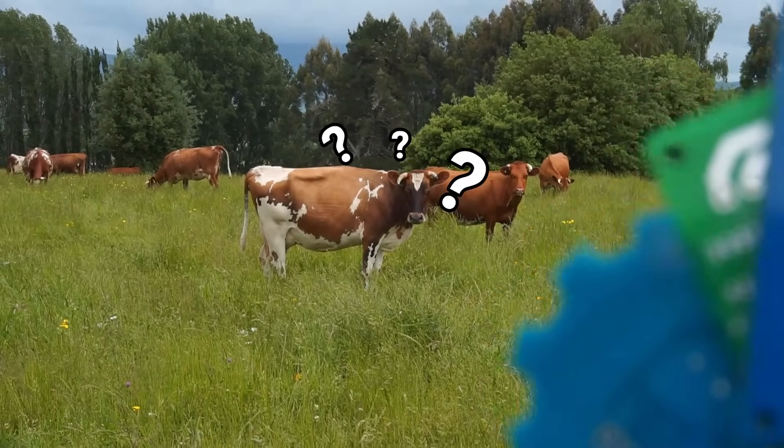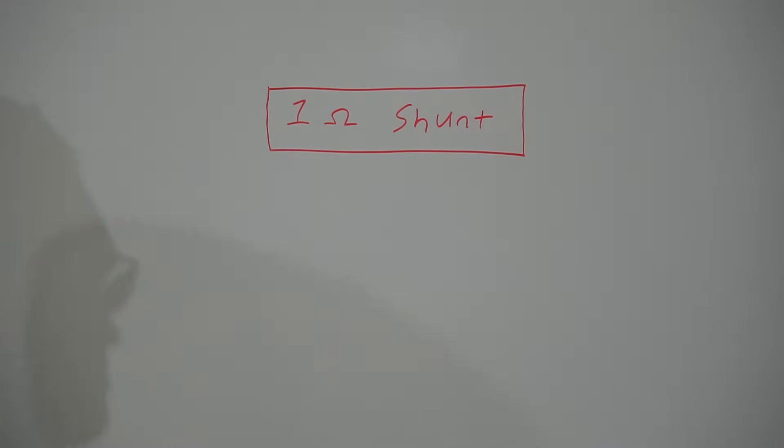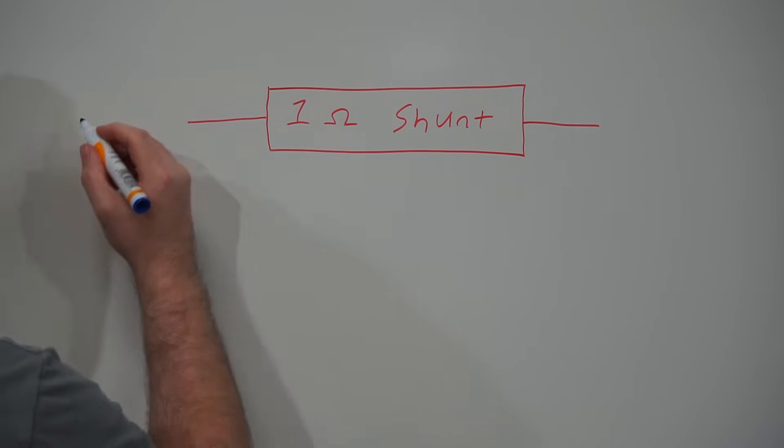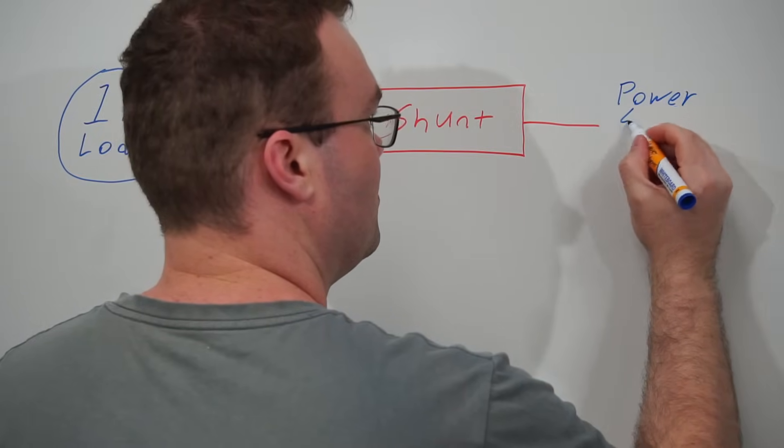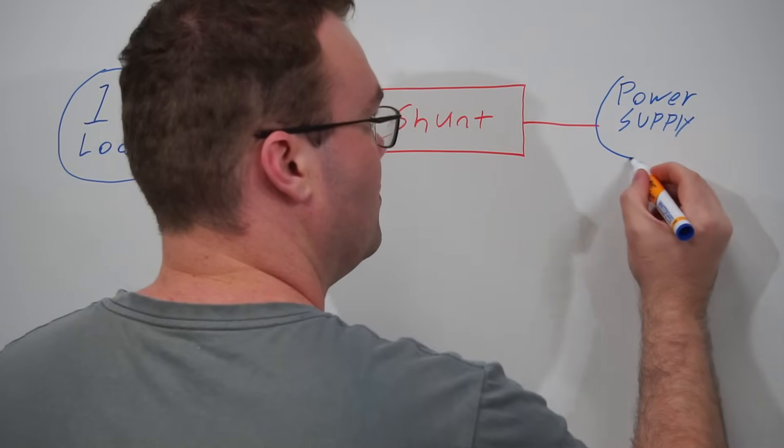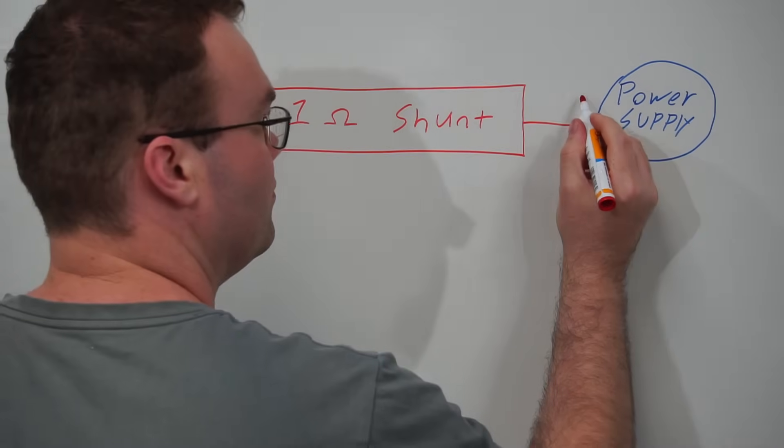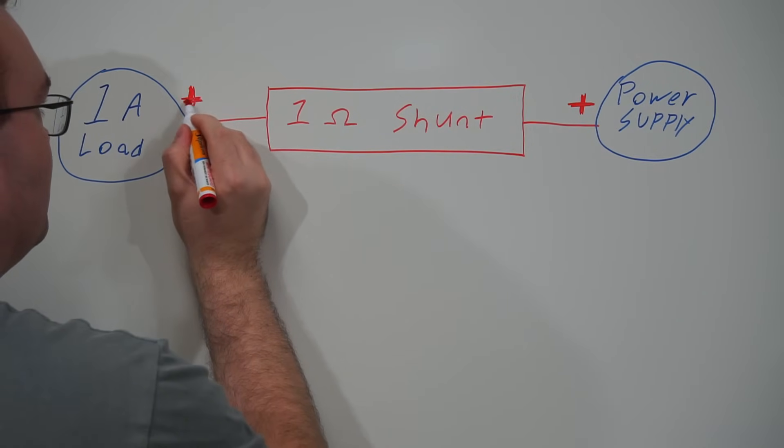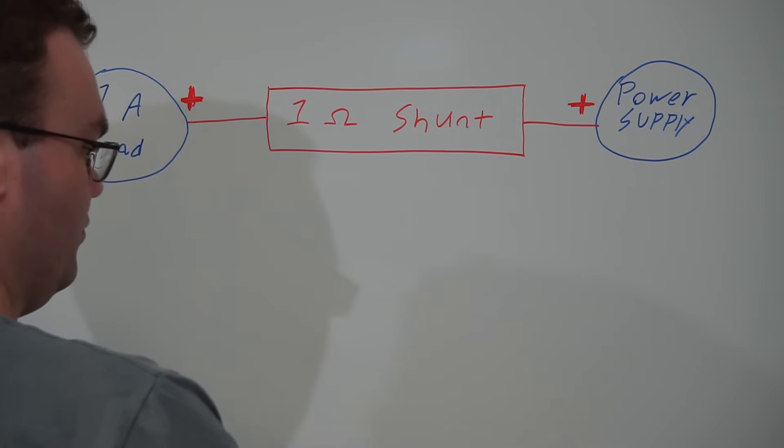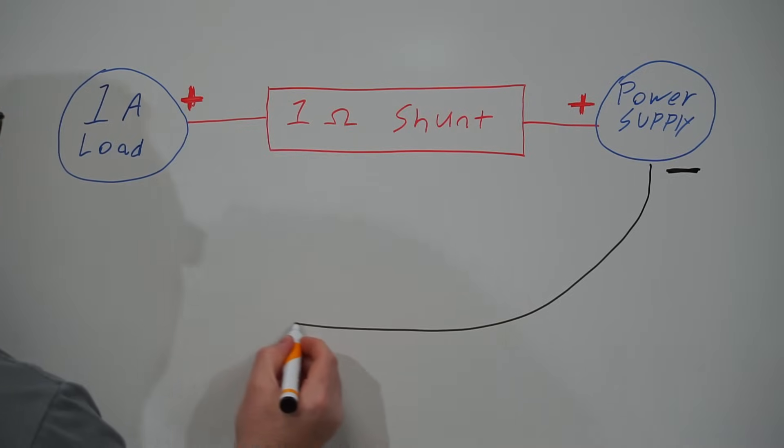You can also choose any color solder mask at no additional cost. And if you're new to designing circuit boards, then check out my KiCad circuit board series to get you started. So using my whiteboard, I'll draw a shunt with a value of 1 ohm. Next I'll add a 1 amp load over here, and lastly we have a power supply.